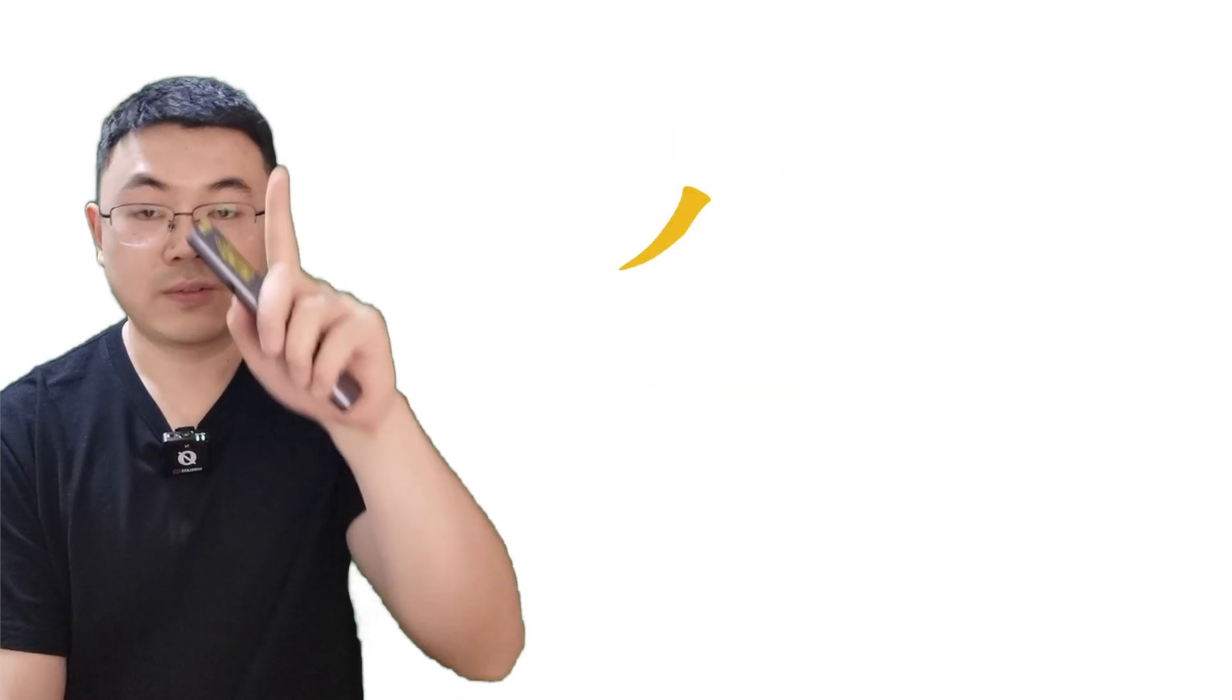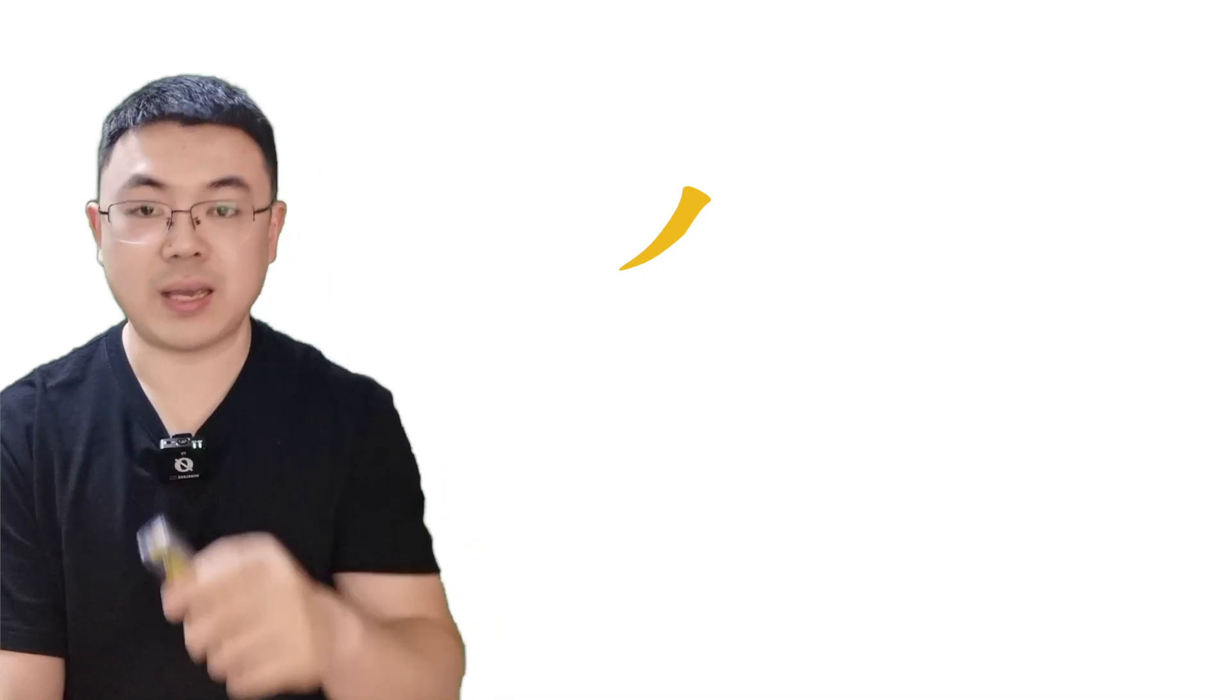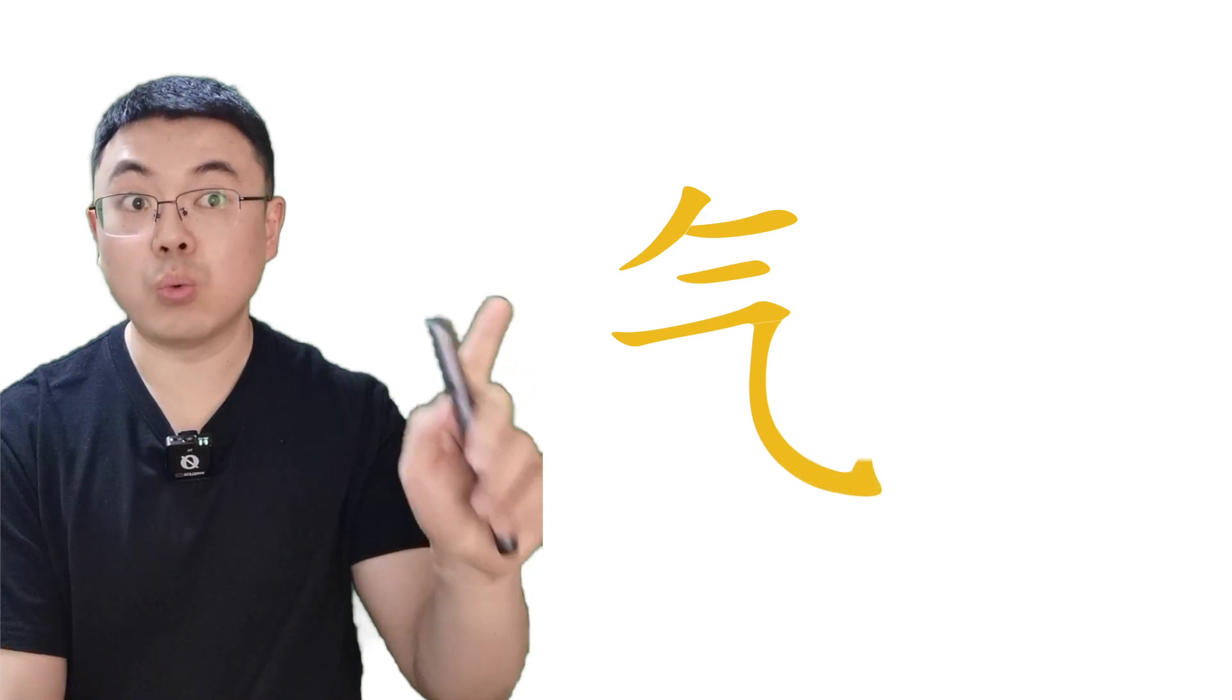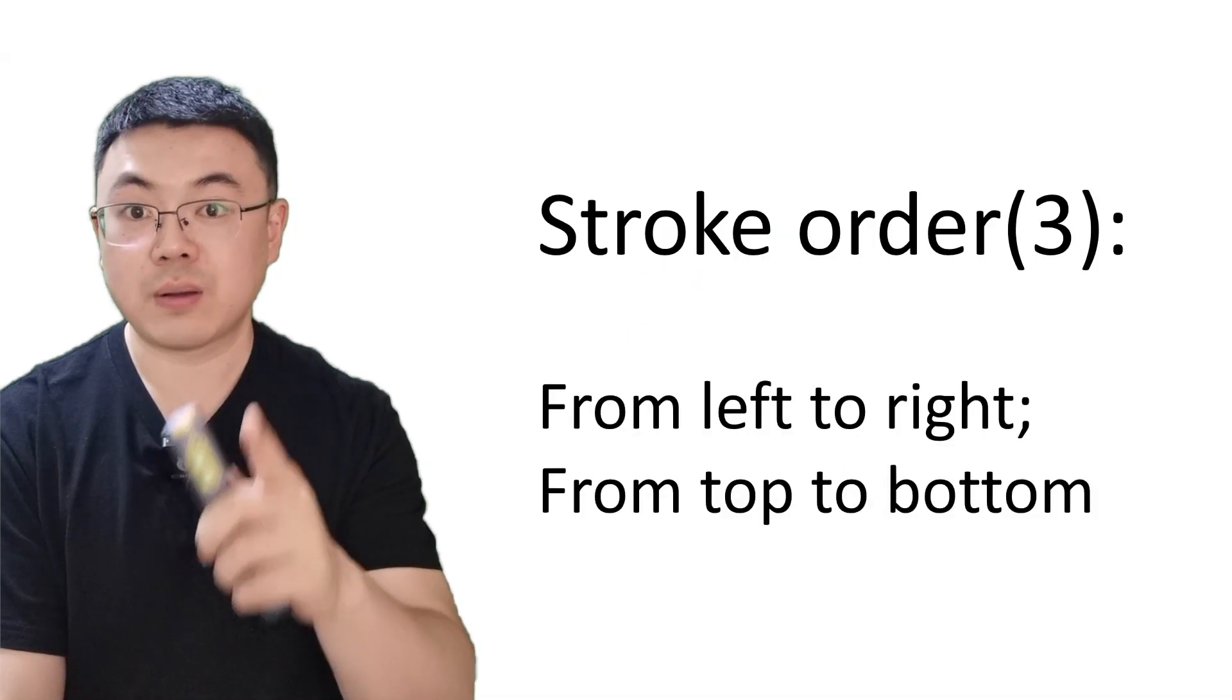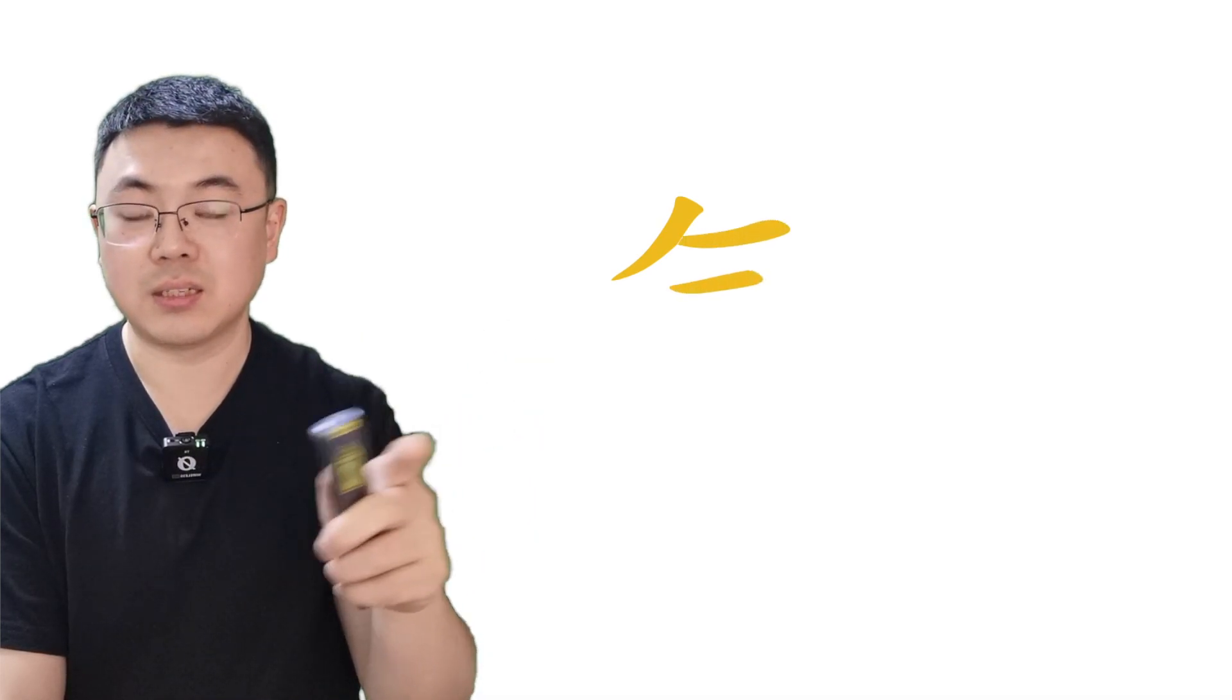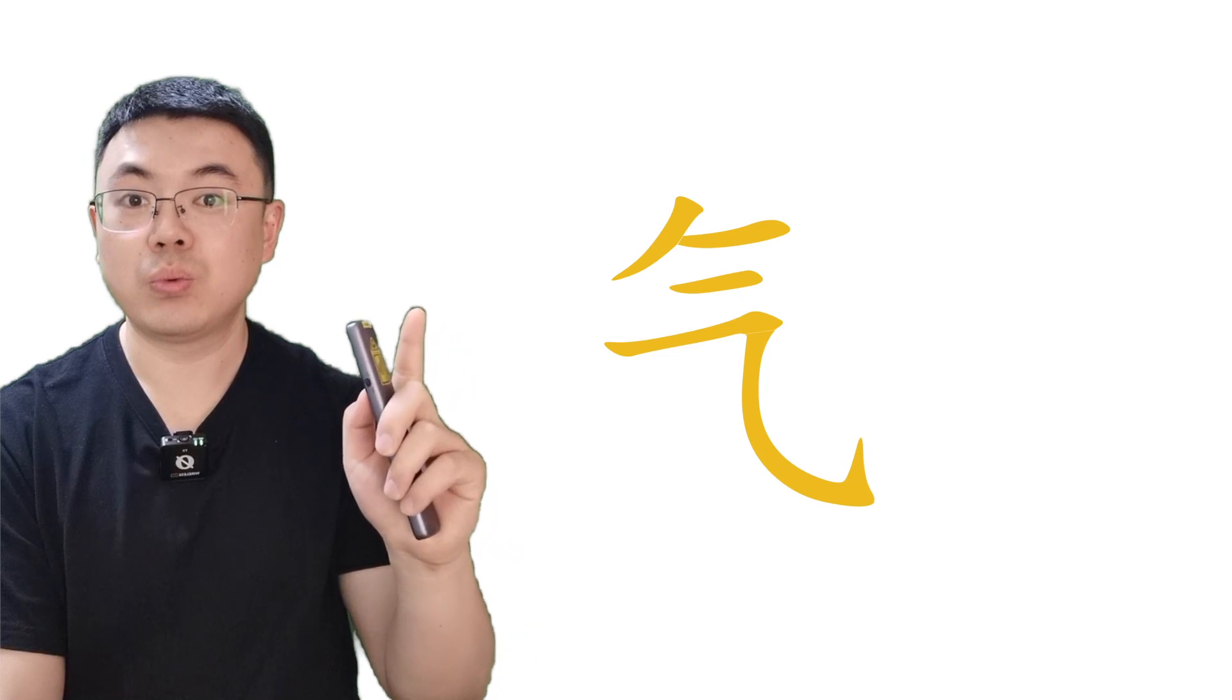Let's see how it is written. Follow me. First stroke, pie. Second stroke, heng. Again, heng. Go on, heng. Heng xie gou. Okay? Do you still remember? Heng xie gou is the second stroke of feng, wind, right? So here is the rule: from left to right and from top to bottom. Let's do it again. Pie, heng, heng xie gou.